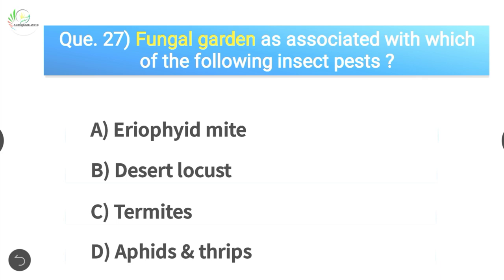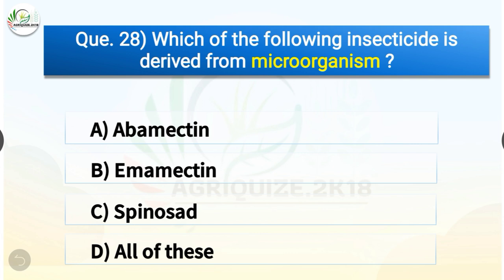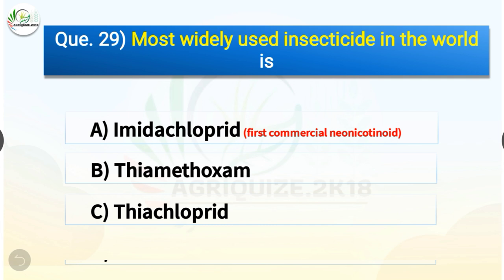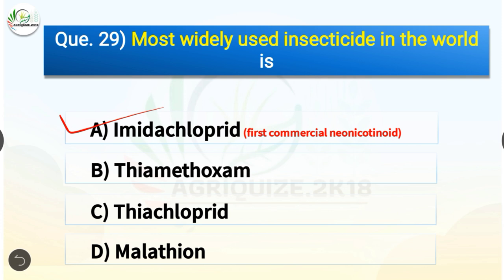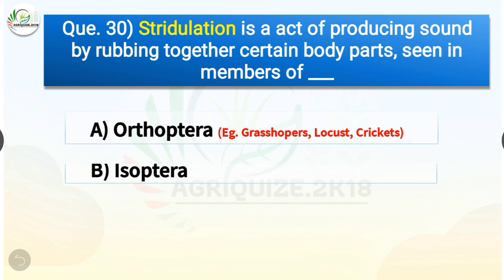Question number twenty-eight: which insecticides are derived from microorganisms? Options are abamectin, emamectin, spinosad, or all of these. The correct answer is option D, all of these. Question number twenty-nine: the most widely used insecticide in the world is — options are imidacloprid, thiamethoxam, thiacloprid, or malathion. The correct answer is option A, imidacloprid, which is also the first commercial neonicotinoid.